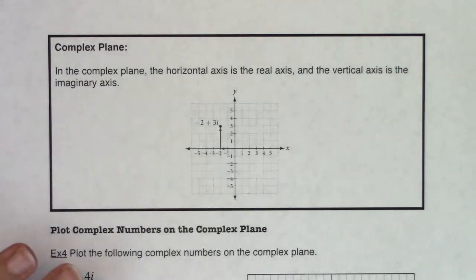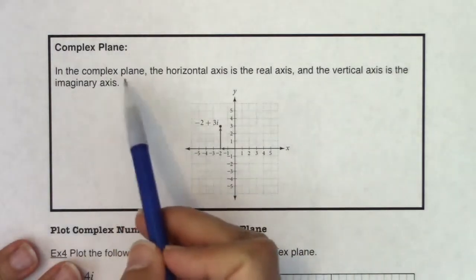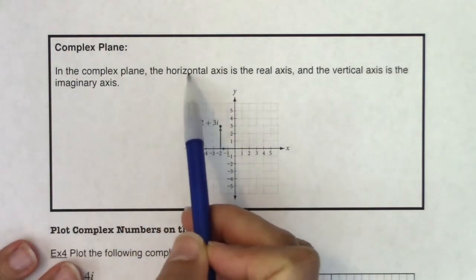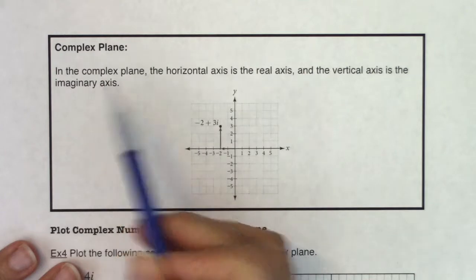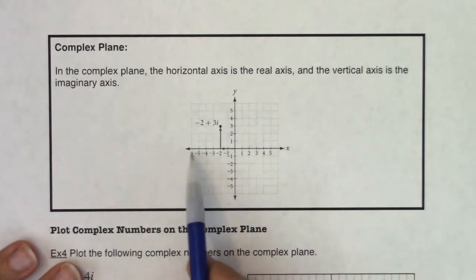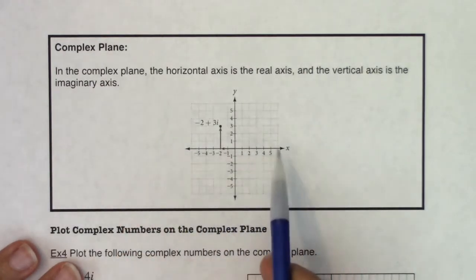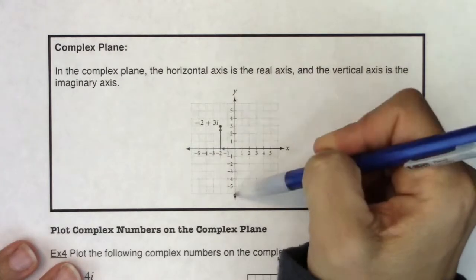So when I say complex plane, in the complex plane the horizontal axis or what we'll call the x-axis is now going to be referred to as the real axis and the vertical axis is the imaginary axis. So these are your real numbers down here and these are the imaginary numbers here.